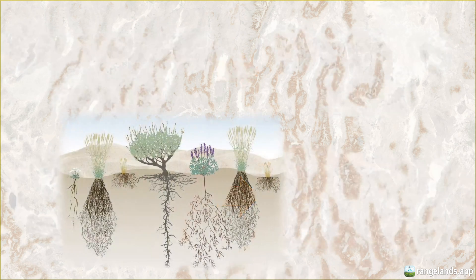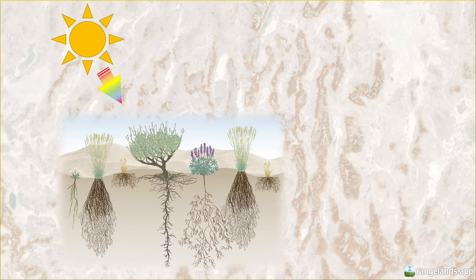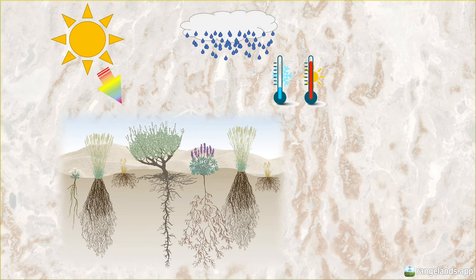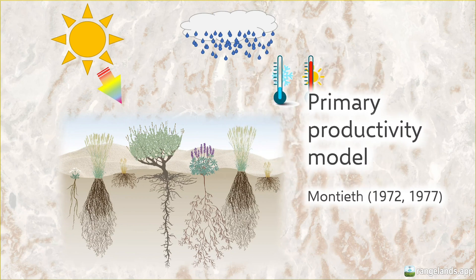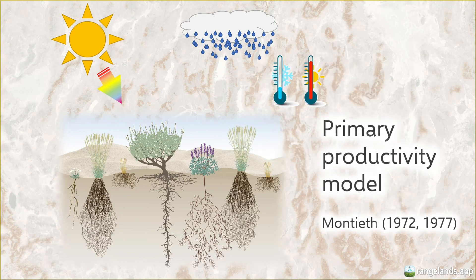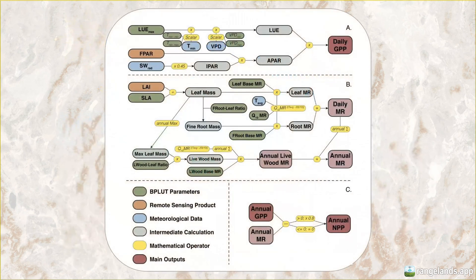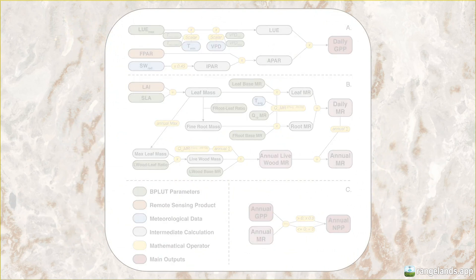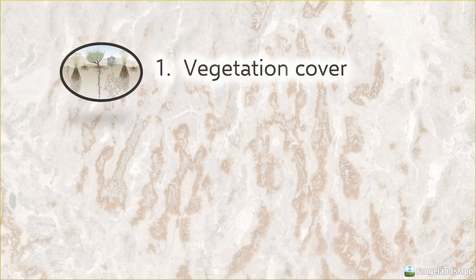Remembering back to those elementary school lessons: to model plant production, we first need to know about the types of plants we're dealing with. Second, we need to know how actively those plants are using solar energy to grow. And third, moisture and temperature are necessary for plant metabolism. Our model captures each of these variables and is an approach for modeling plant growth that has been applied for nearly 50 years.